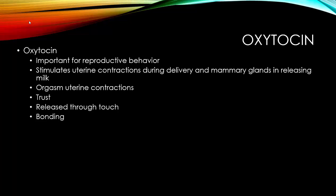Oxytocin is also known as the trust hormone or the bonding hormone, and it's released through touch. I teach a sexuality class, and through my research I came across a finding that the number one predictor of whether or not a woman has an orgasm early on in dating is whether or not she trusts her partner.